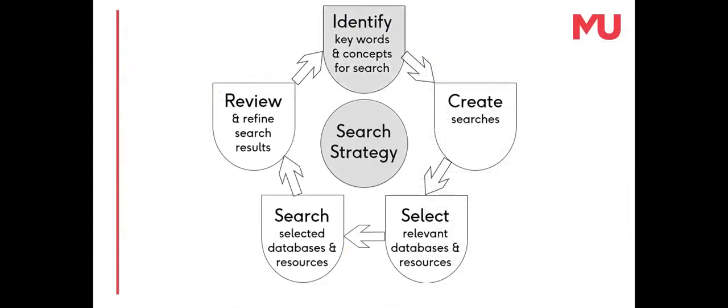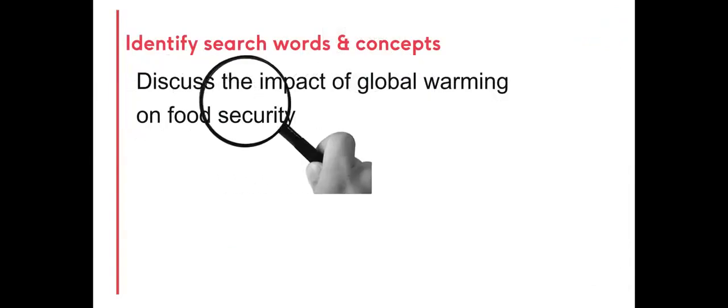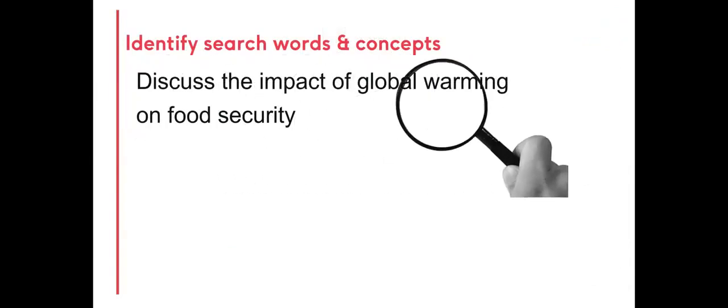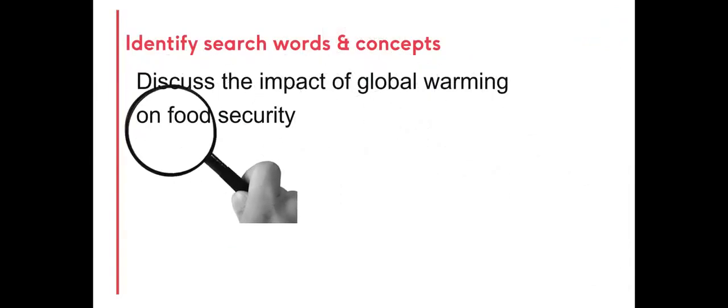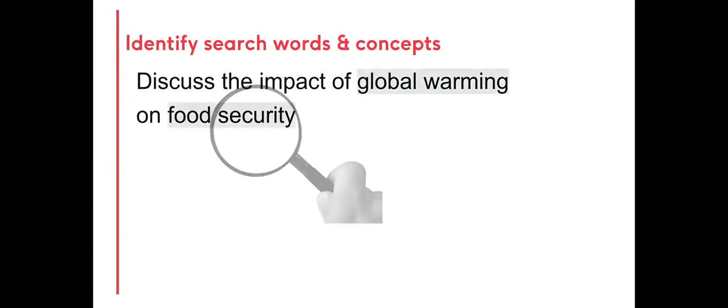Start by examining the topic or question to identify words and concepts to use when searching for relevant research. In this example, the search words are global warming as well as food security.